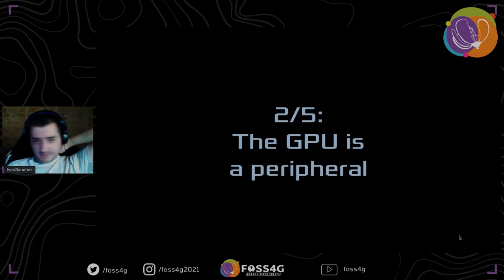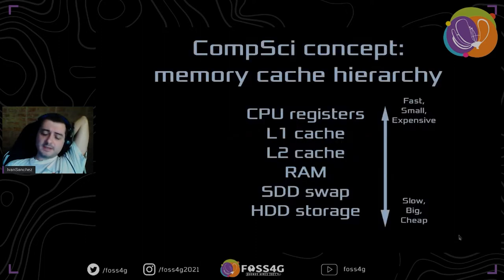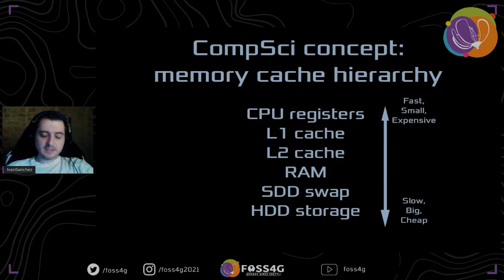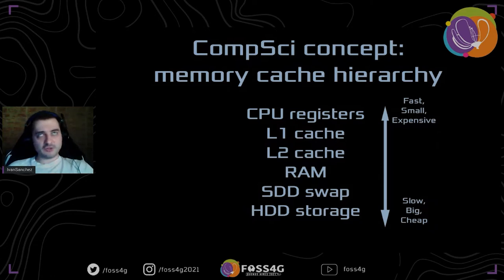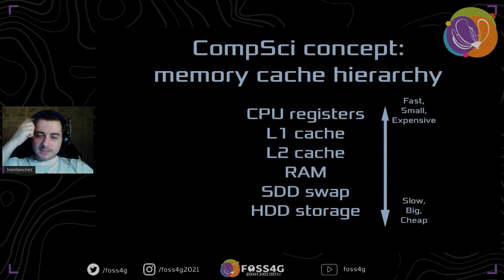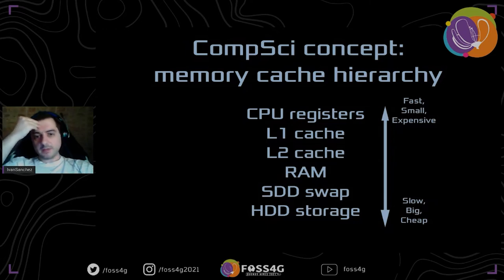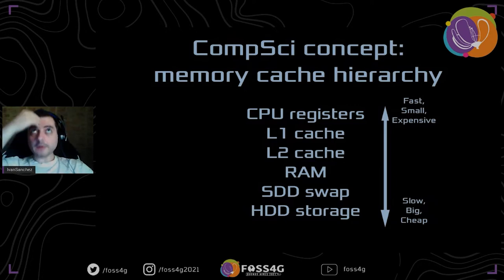Part two: the GPU is a peripheral. This has to do with how memory is handled by computers. Anybody with knowledge about computer science knows that there's a thing called memory hierarchy, because different types of memory technologies have different access times, throughput, and capacities. CPU registers hold maybe 10 to 20 numbers; L1 and L2 cache holds a few thousand numbers; RAM holds a few million or milliard; and then you have hard drives, which hold as much as you can afford because it's relatively inexpensive.